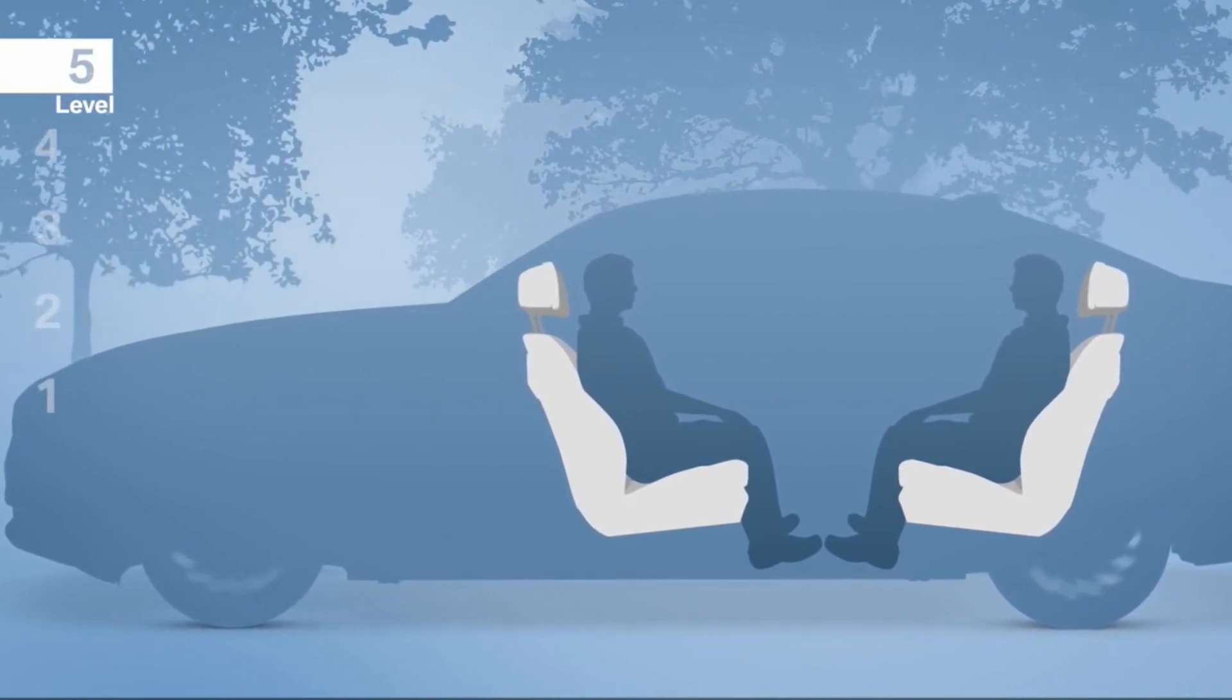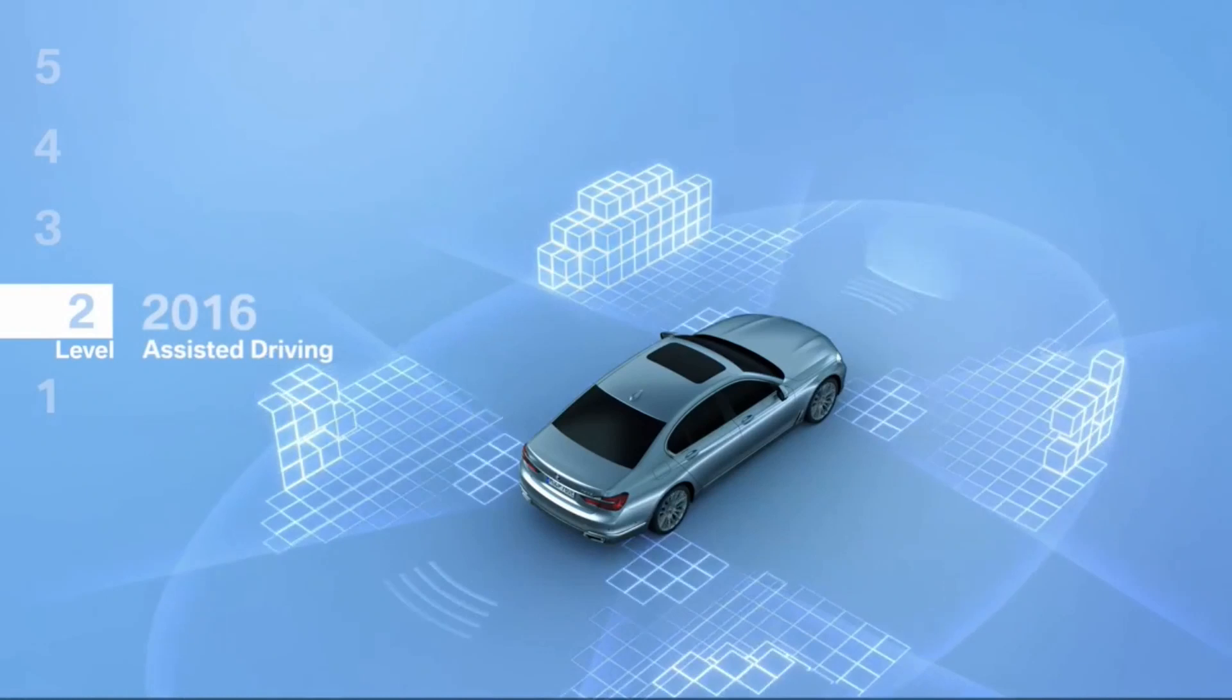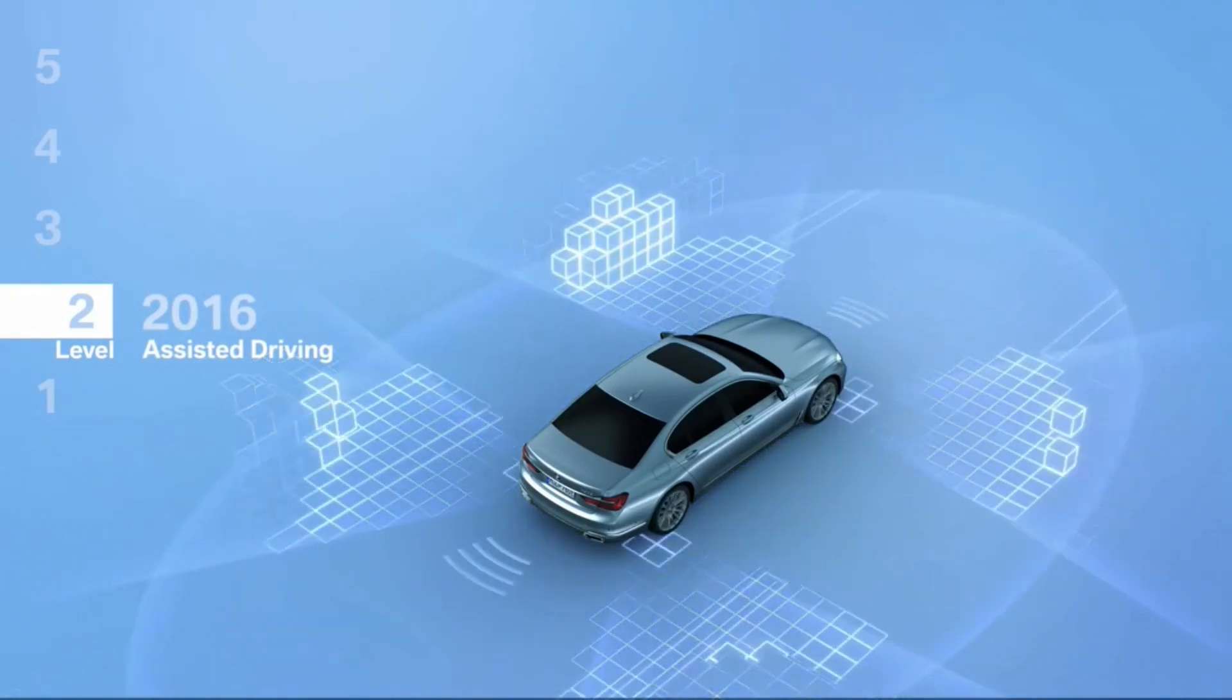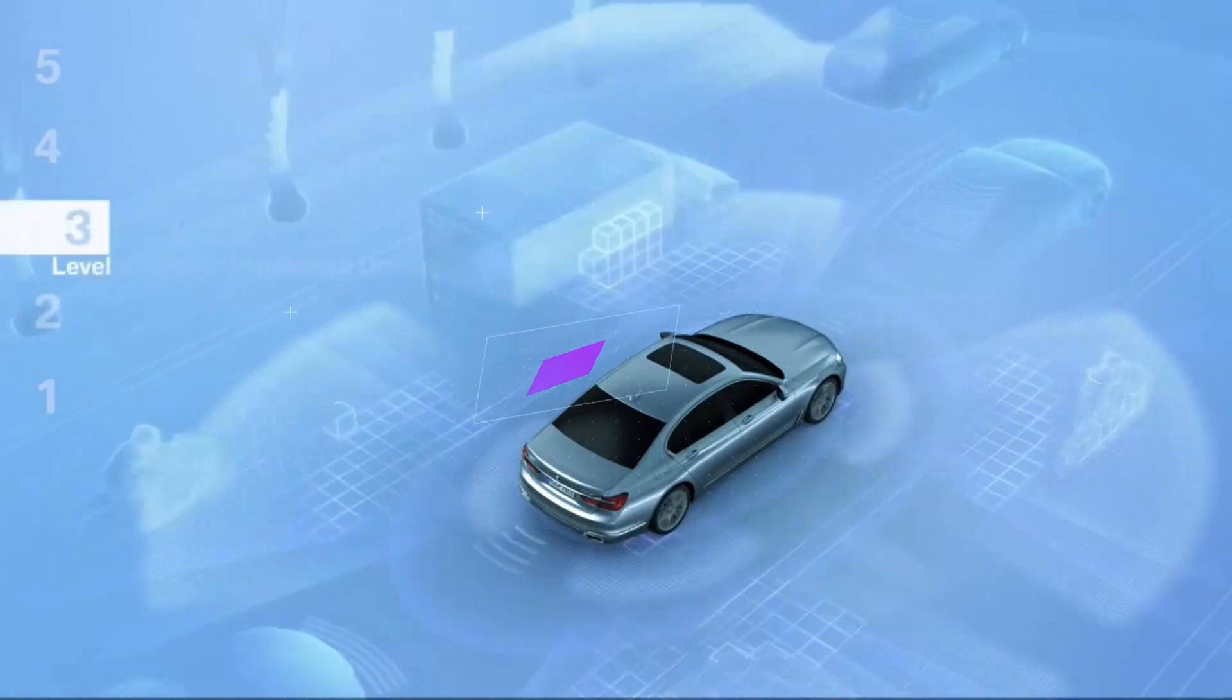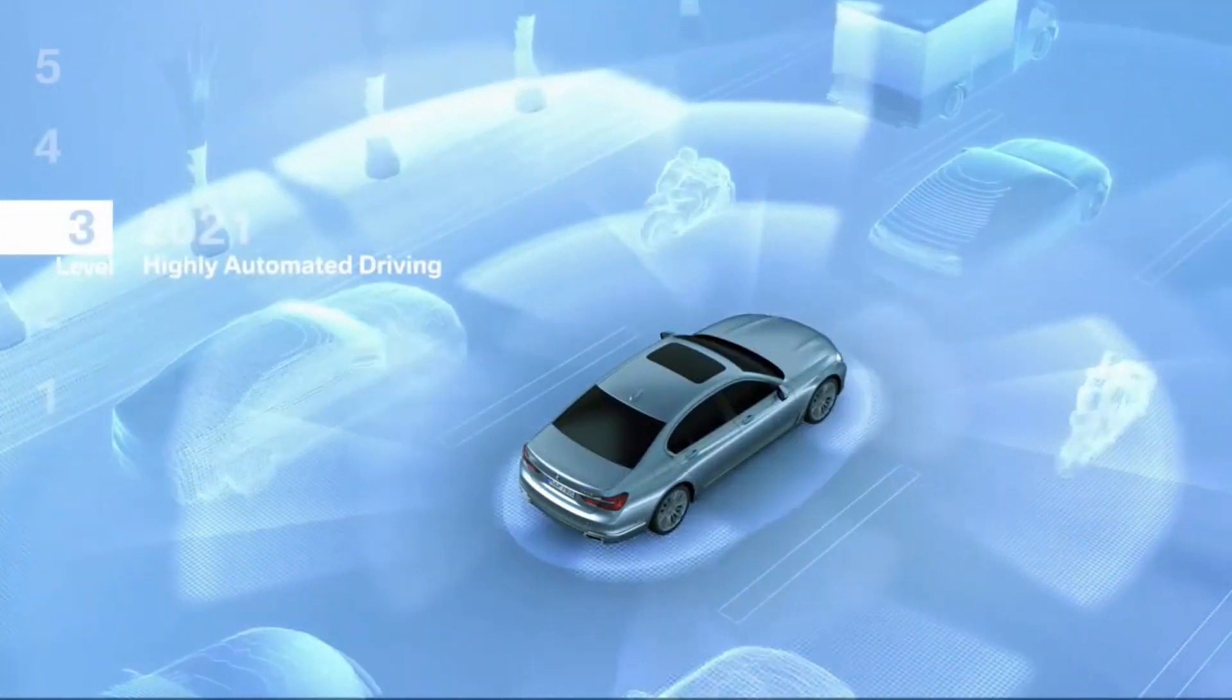In order to achieve this automation, we need to understand the technical aspects, starting with the connection. For a car to navigate the streets without human interference, it needs a huge number of sensors and a very fast connection with the data servers.